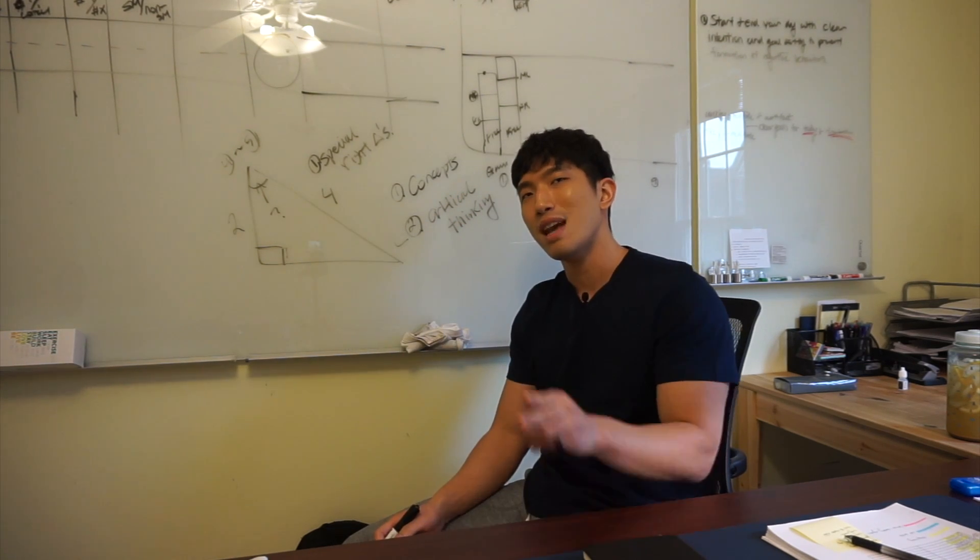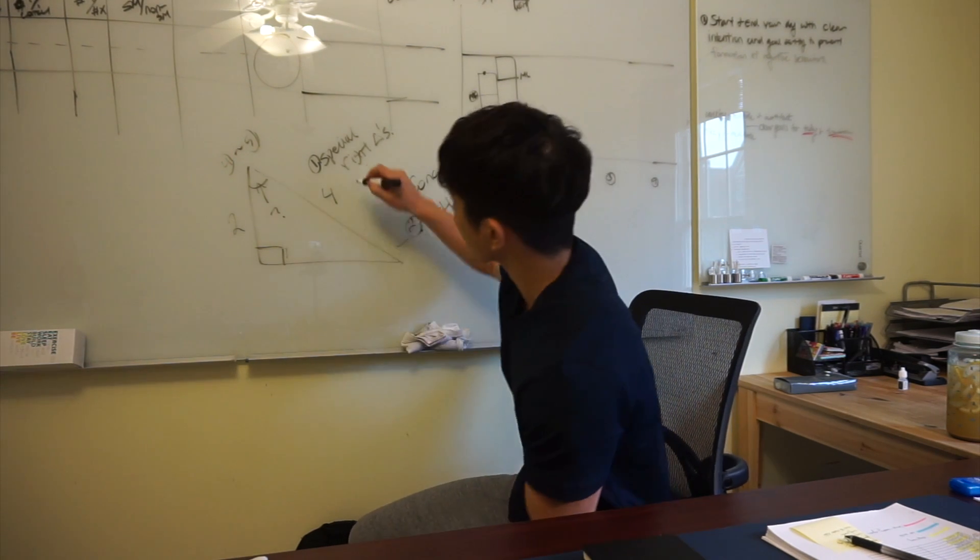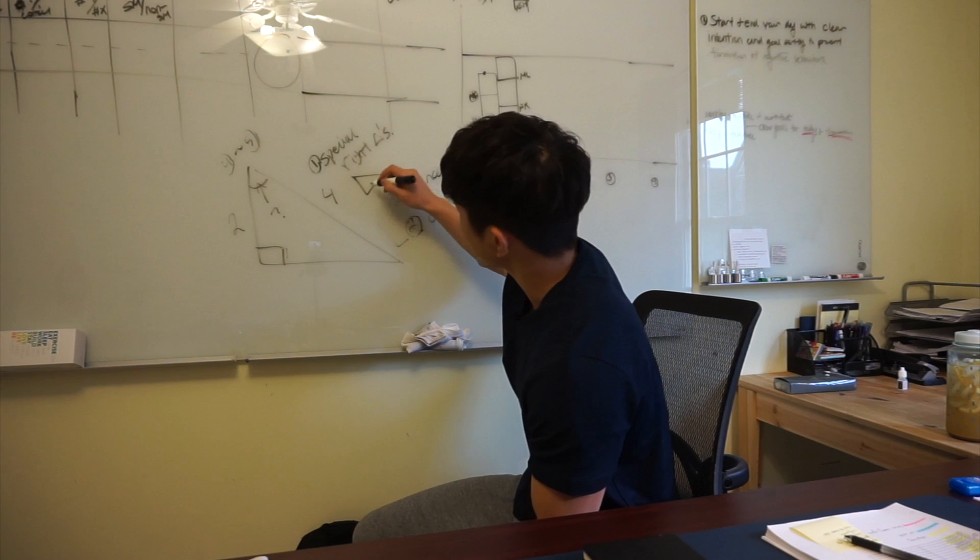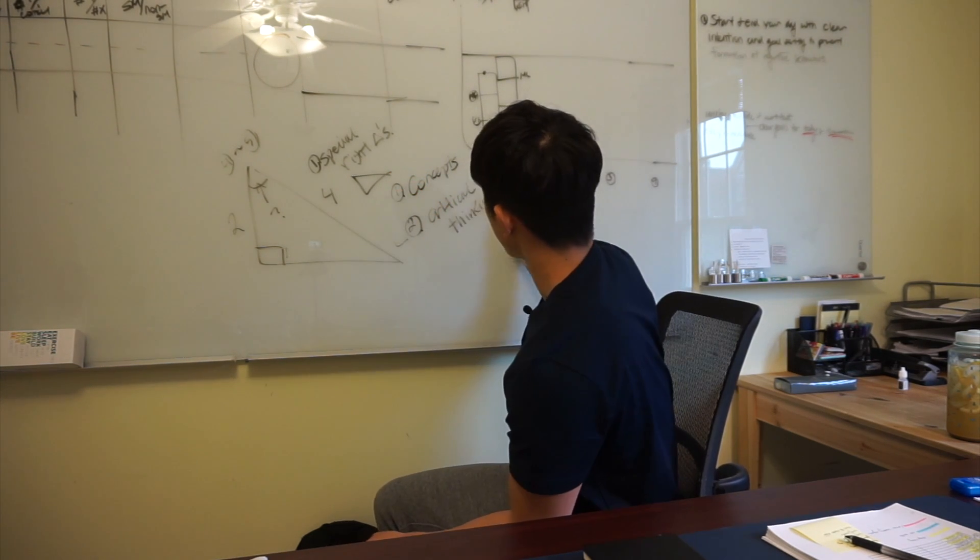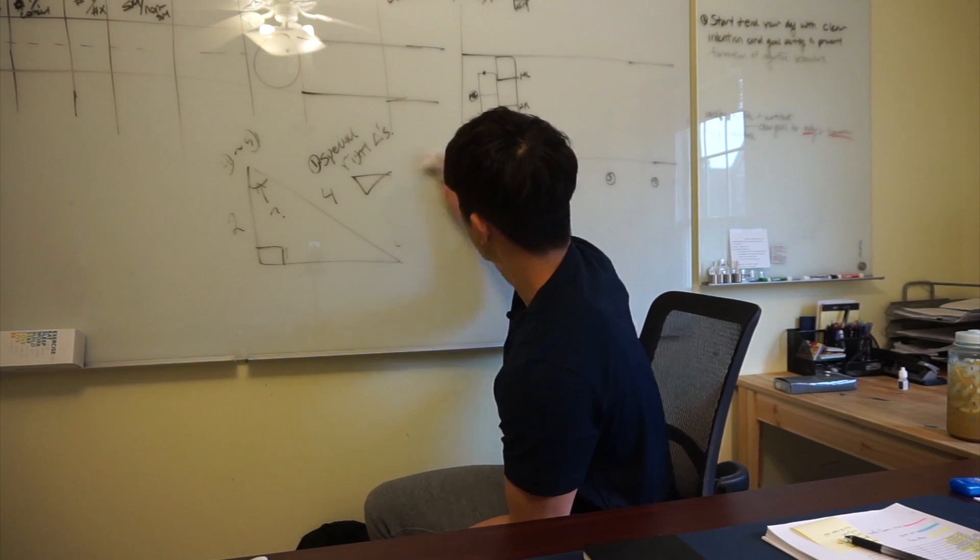So, if you look at, as I mentioned, the concept of this testing is special right triangles. If you think of special right triangles, there's two types, 30-60-90, and 45-45-90.